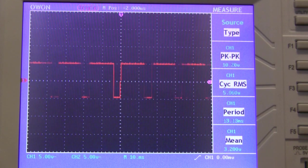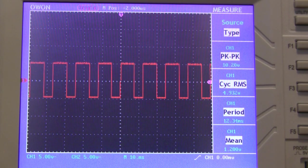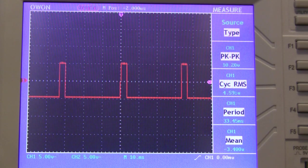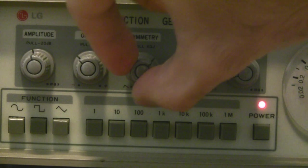Now let's look at duty cycles. The duty cycle of a wave is basically the percentage of the time that the wave stays at the higher voltage. I can change the duty cycle using the symmetry dial over here.